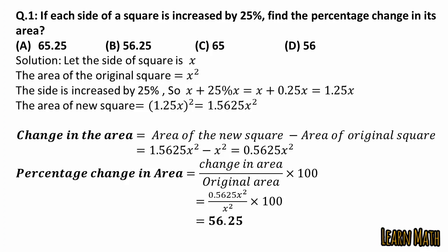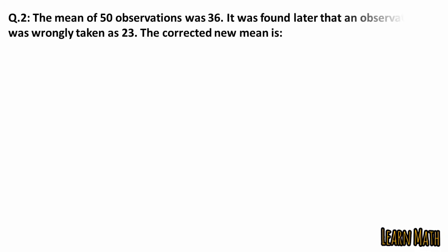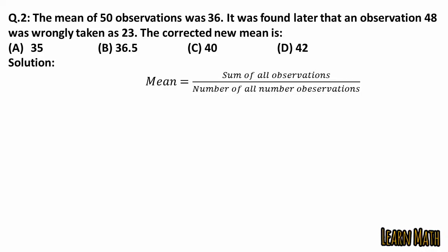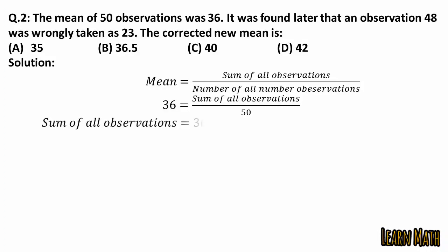The second question is: the mean of 50 observations was 36. It was found later that an observation 48 was wrongly taken as 23. The correct new mean is — these are the four options. As we know, mean equals sum of all observations divided by number of observations. So with mean 36 and 50 observations, multiply 50 by 36 and we get the sum of all observations equal to 1800.